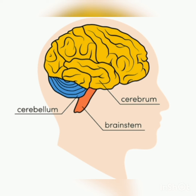The cerebellum controls and coordinates voluntary movements like posture, balance, coordination, speech, and activities like running, walking, cycling, and exercising. This part is important for our voluntary movements. If the cerebellum does not work properly, it becomes very difficult for our body to maintain balance — our body becomes imbalanced. So the cerebellum balances our body.